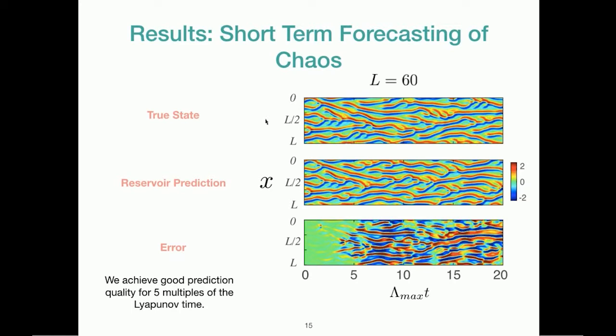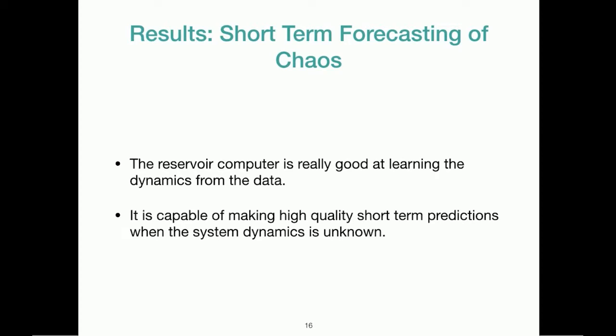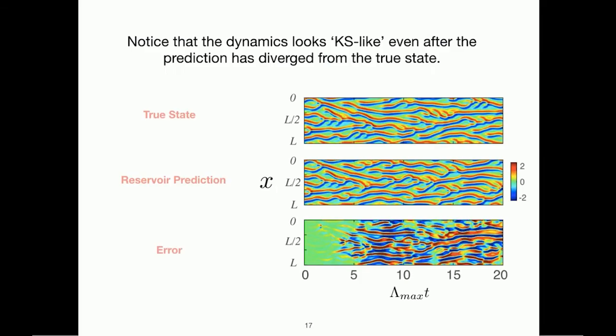So these are the results for short-term forecasting of chaos. You have the top panel which shows the true state. The second panel shows the reservoir prediction. And the third panel shows the error, which is the difference between the reservoir prediction and the true state. As you can see from the color scheme here, a value of zero is indicated by a green color. The error is very low for five multiples of the Lyapunov time. So we say that the reservoir computer is really good at learning the dynamics from the data, and it is capable of making high-quality short-term predictions when the system dynamics is unknown.